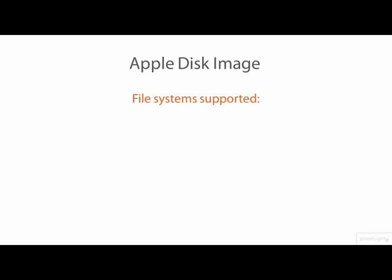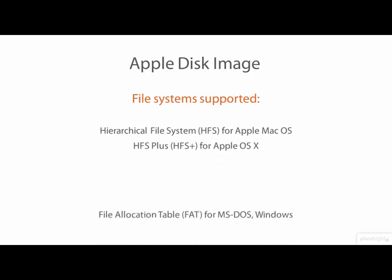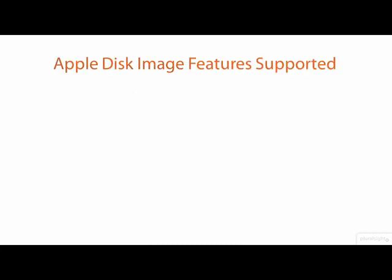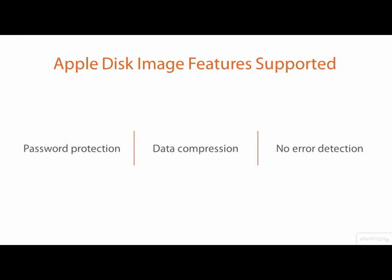A DMG file can contain one of several different types of file systems, including HFS and HFS Plus, MS-DOS file allocation table, ISO 9660 for compact discs, and UDF for DVD and Blu-ray discs. Apple disk image files can also store hybrid optical media images that themselves contain multiple file systems. Although not a true forensic file format, Apple disk images support several advanced features, including secure password protection and data compression. However, Apple disk image does not support any specific error detection features. External cryptographic hashing is the typical method used for detecting errors in DMG files.